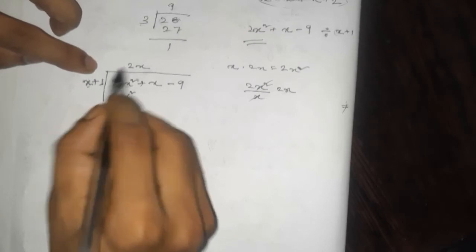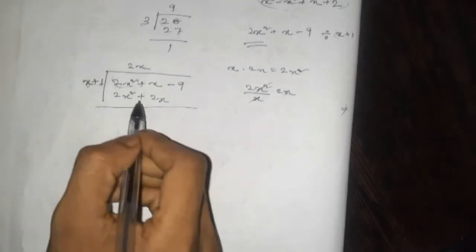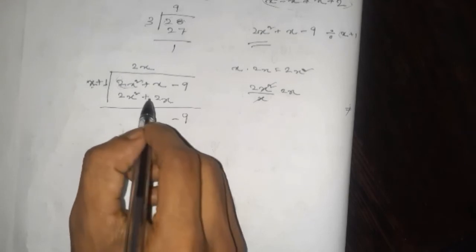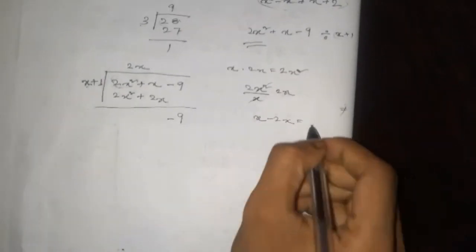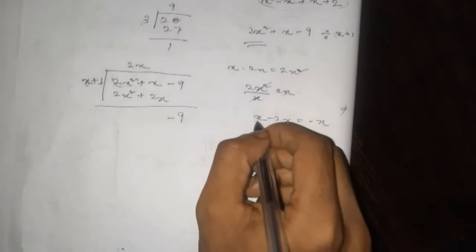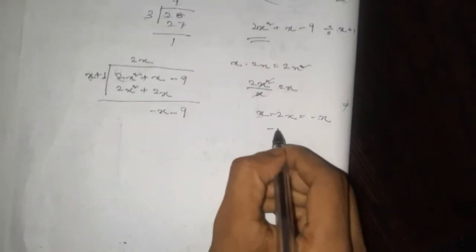1 to 3. 2x will add 2x to minus 2x, will add 2x to minus 2x, will add 2x to minus 2x. 2x, 2x, 2x.